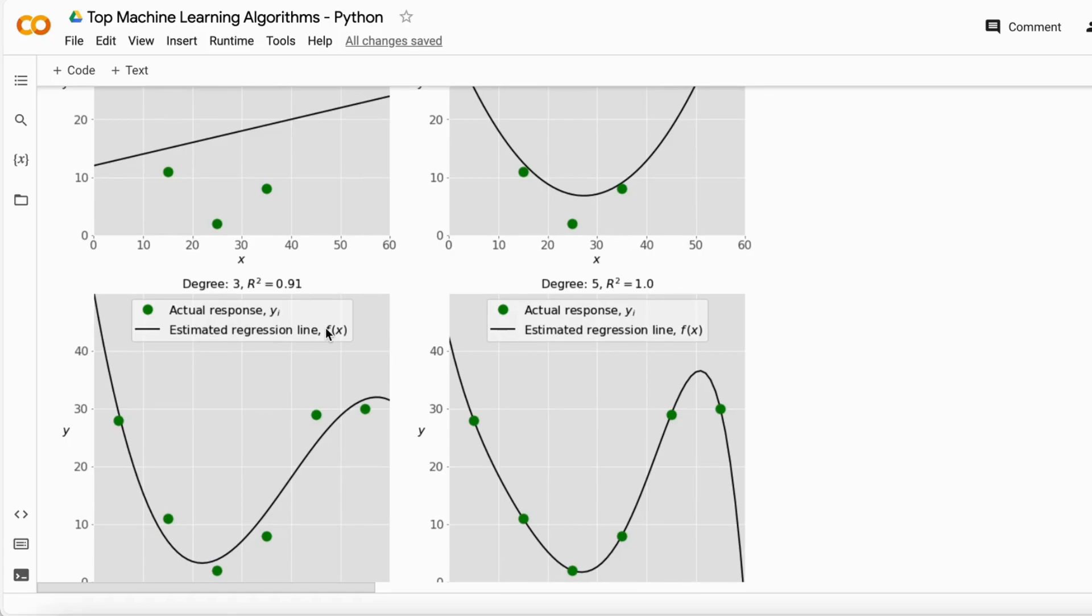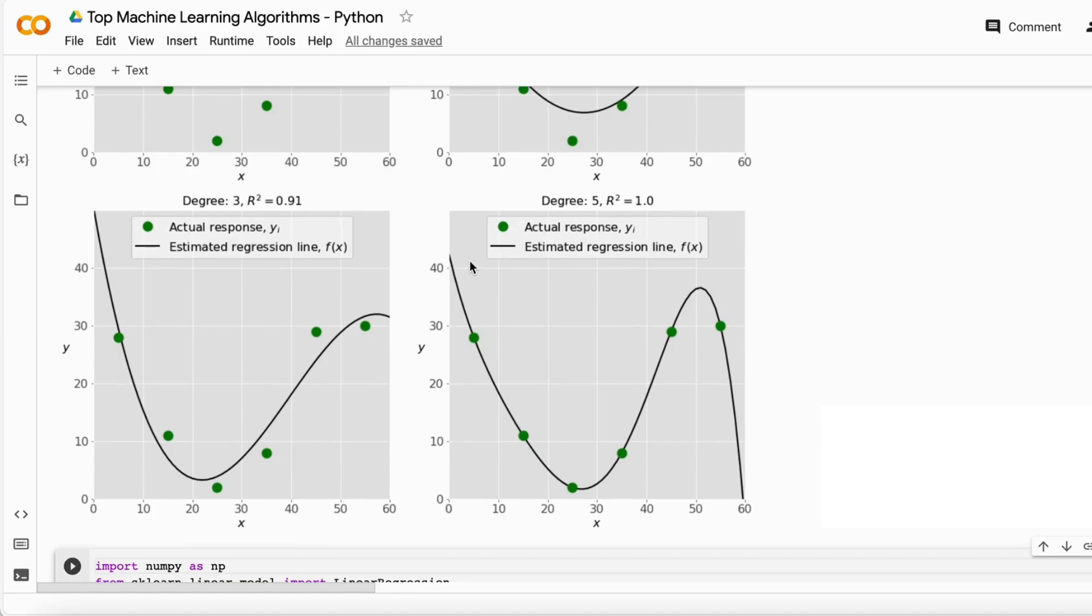But if you increase the degree to 5, your model accuracy is 1. In that way your model captures all the fluctuations here. You can say that my model is overfitted here because it captures all the small fluctuations in the data. It gives accuracy of a hundred percent on your training data, but on the test data it doesn't perform well.